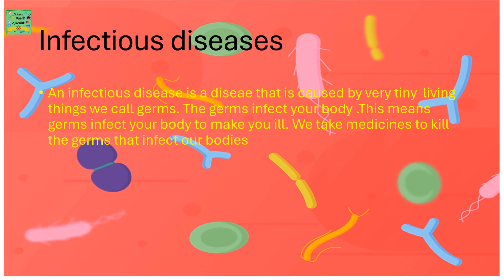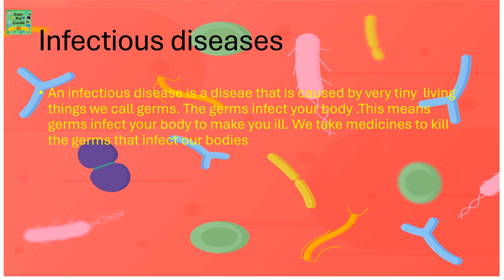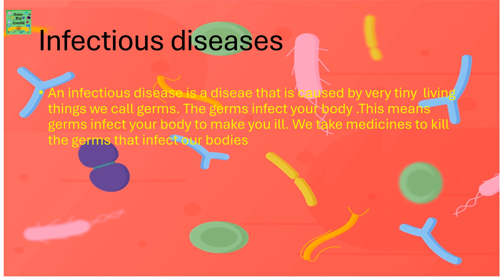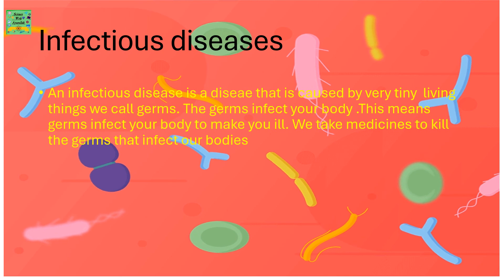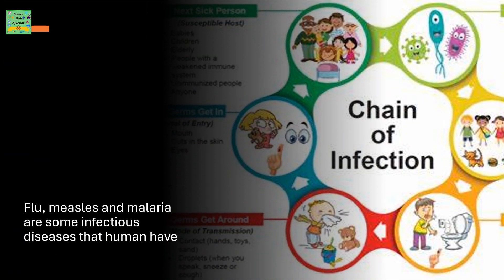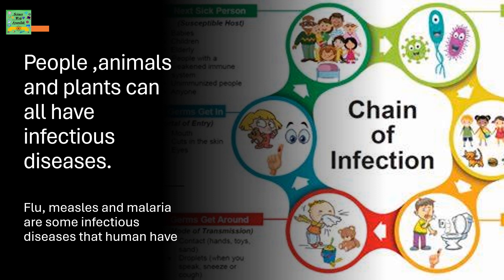An infectious disease is a disease that is caused by very tiny living things we call germs. The germs affect your body — this means germs infect your body to make you ill. We take medicines to kill the germs that infect our bodies. People, animals, and plants can all have infectious diseases. Flu, measles, and malaria are some infectious diseases that humans have.